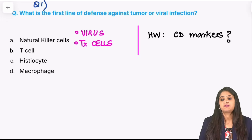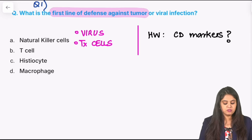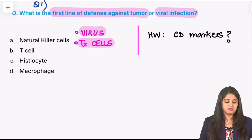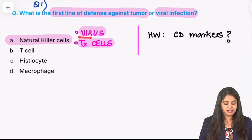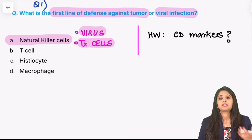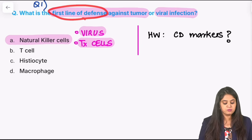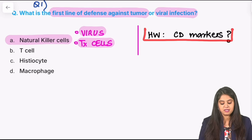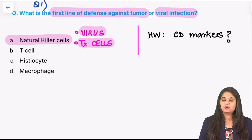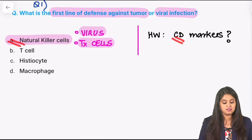Question number one is from immunology — in fact the first two questions are. They ask: what is the first line of defense against a tumor or a viral infection? Against tumor cells and against viruses, the first line of defense in our body are the NK cells, or natural killer cells. You might think viruses are killed by T lymphocytes, but that is always the second step. The first line of defense asked will always be the natural killer cells, and they are associated with some very important CD markers — that's your only homework for the day.